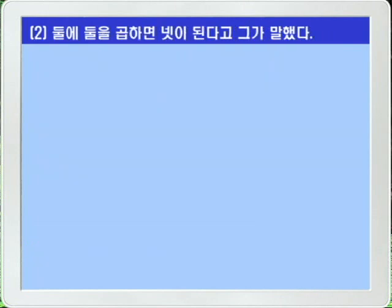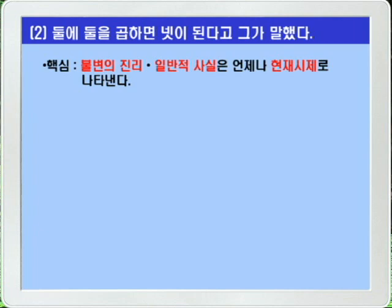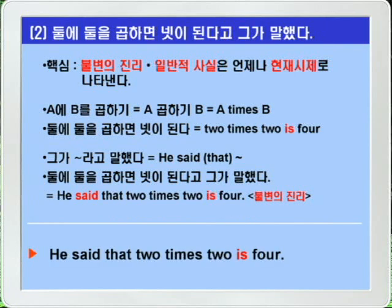Translation Exercise 2: 'He said that 2 times 2 is 4.' The key point is that universal truths and general facts always use the present tense. 'Two times two equals four' is a mathematical truth, so the present tense 'is' is used even though the main clause verb 'said' is past. Answer: He said that 2 times 2 is 4.